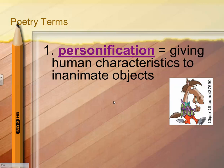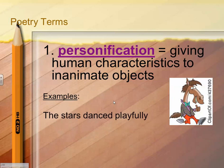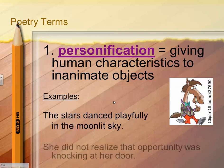Our first term is personification, which is giving human characteristics to inanimate objects or non-human objects. For example, the stars dance playfully in the moonlit sky. Stars cannot dance, so that is personification.